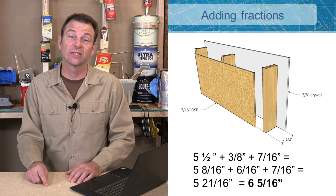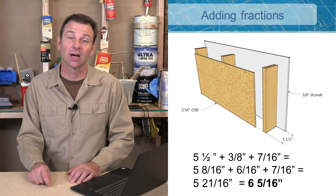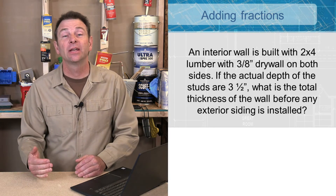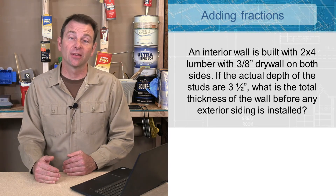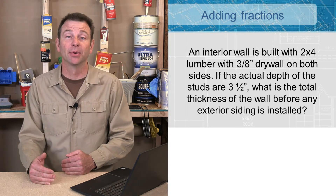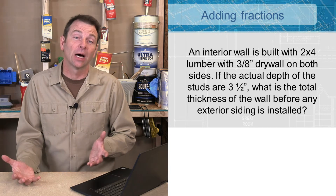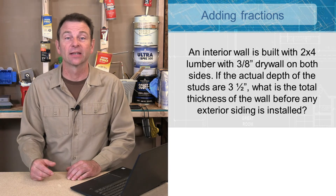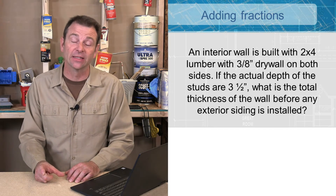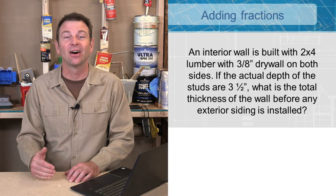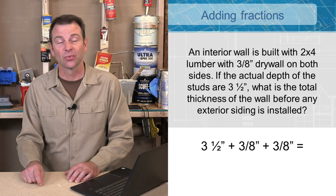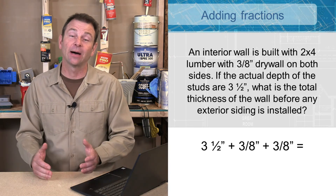Continuing on with adding fractions together, here's another problem to solve. We need to build another wall — this time we're building it with two-by-fours and we need three-eighths drywall on both sides of that wall, a typical installation. We need to know the total thickness with all those materials added together. We know that a two-by-four is three and a half inches deep, and we're going to add three-eighths onto each side. So now we have three and a half plus three-eighths plus three-eighths.